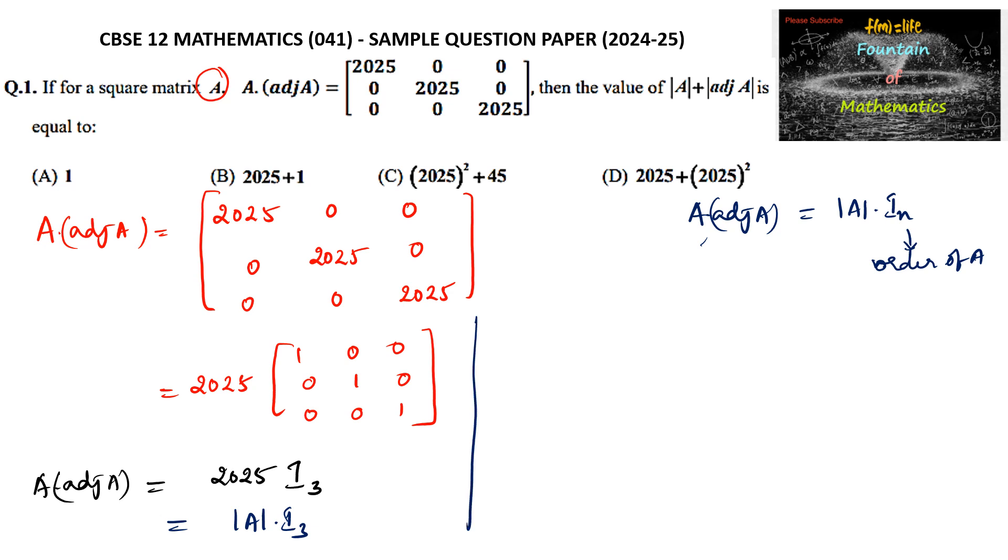So determinant of A is equal to 2025. Also, we know that determinant of adjoint of A is equal to determinant of A to the power of N minus 1. Here N is equal to 3, so 3 minus 1 is 2. So determinant of adjoint of A is 2025 whole square.